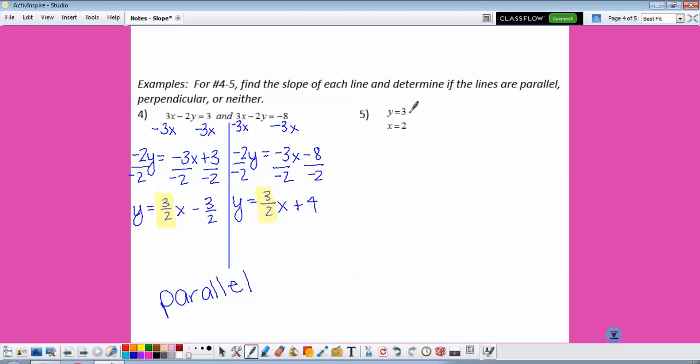In this one, we're given Y equals a constant and X equals a constant. I'm going to show you what these look like graphically. So Y equals 3. If you remember from algebra 1, Y equals 3 is a horizontal line that crosses the Y axis at 3.